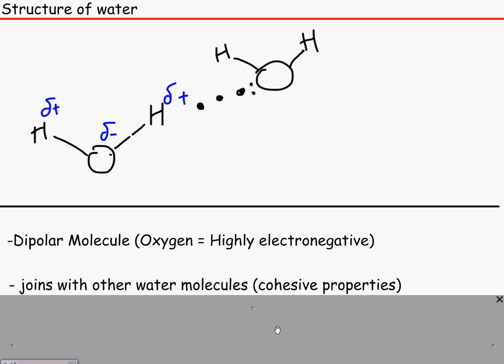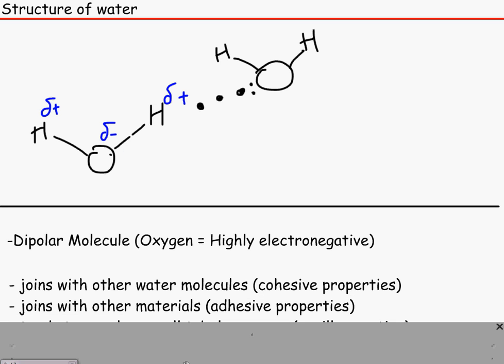So we know that water molecules like to join in with other water molecules. And that makes it have this cohesive property. This cohesive property is that the water tends to join with other water molecules. And surprisingly enough, they like to join in with other materials as well. For example, we've got adhesive properties.